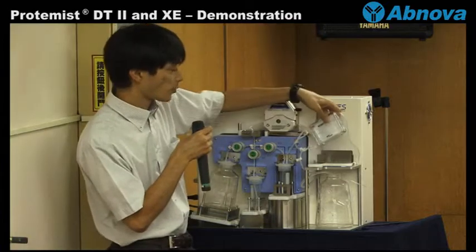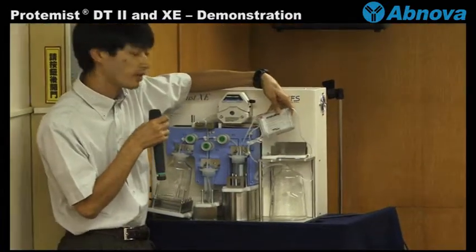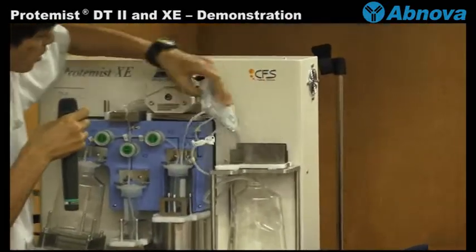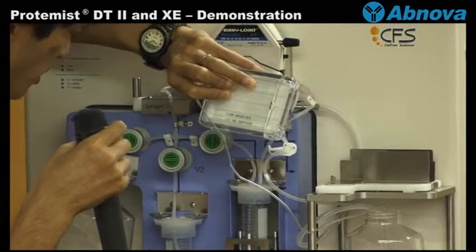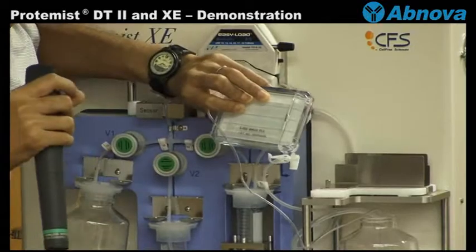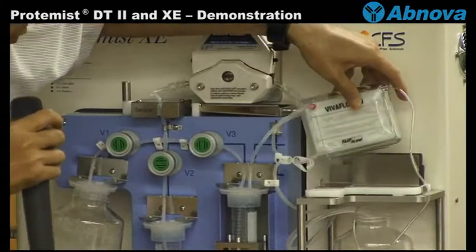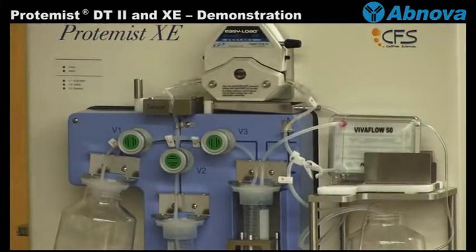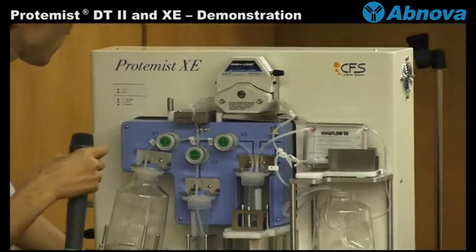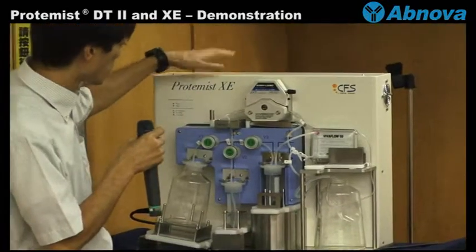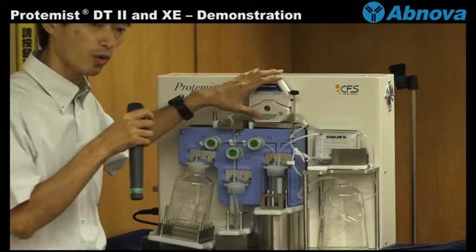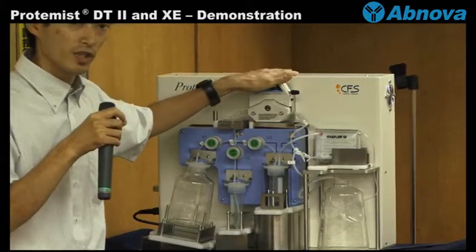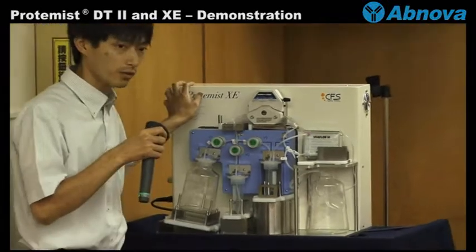This is a filter, the 10,000 dalton molecular weight cutoff filter. So this filter, the translation buffer is exchanged. This has the pump. The moving part is only a pump, so this is almost maintenance-free. Very easy to handle.